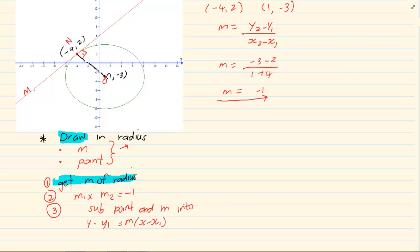How do I get our M2? We know that M1 times M2 is equal to negative 1. How do I know it's 90 degrees? Because tangent perpendicular to radius, which is your grade 11 geometry. If M the radius 1 is minus 1, that would mean M2 is equal to 1.